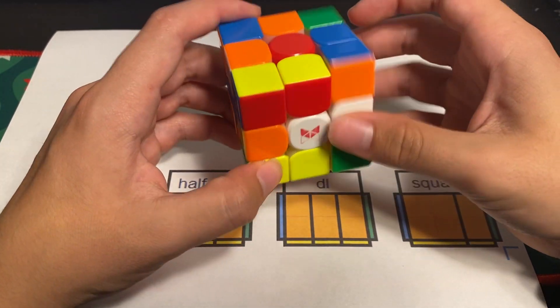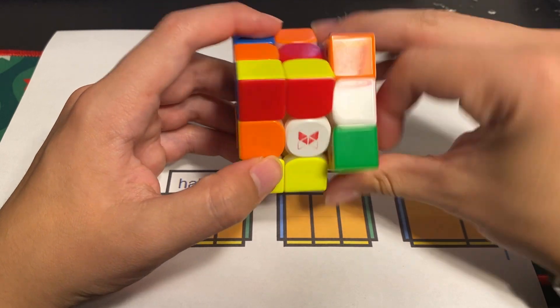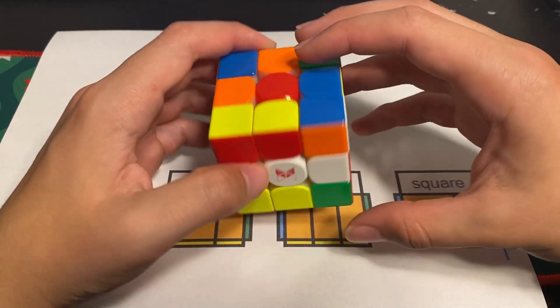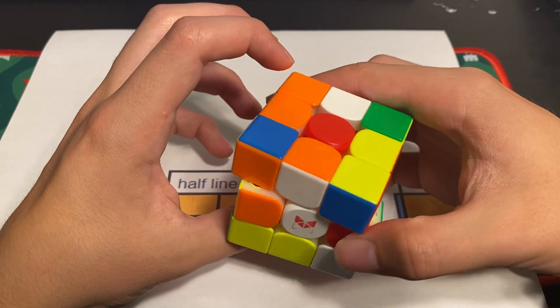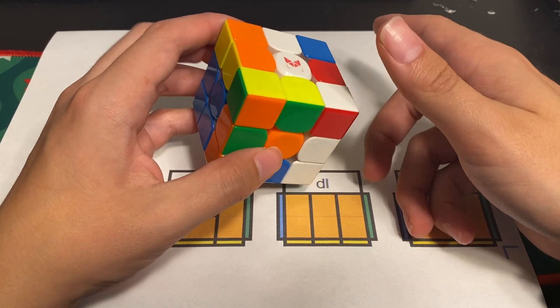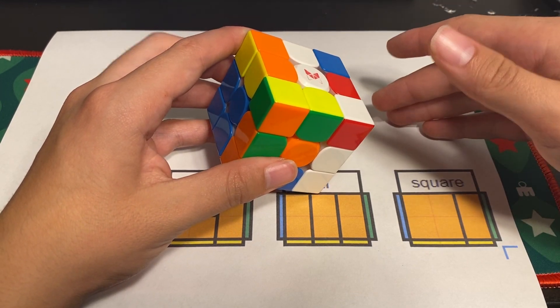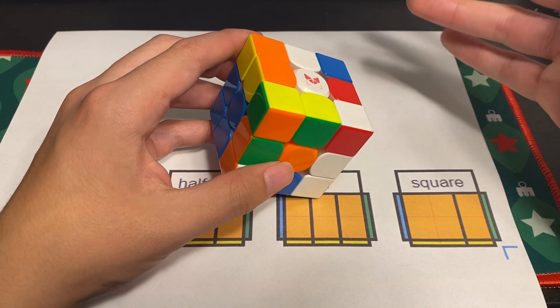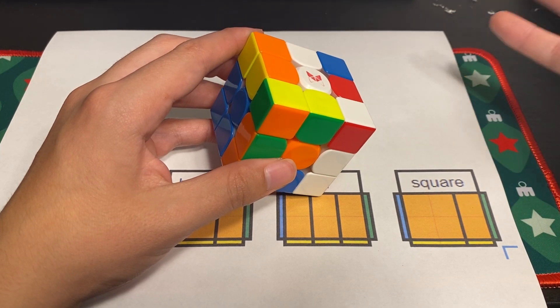You could do a B R prime move and you'll realize, hey, I can actually insert this pair with a R B prime, right? You can learn things you didn't know before by just undoing, by doing moves and seeing what to do. And then you know that the inverse of those moves is a solution.